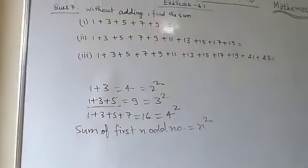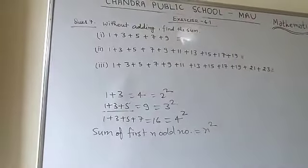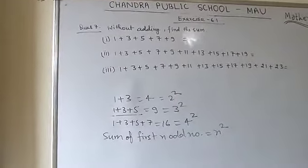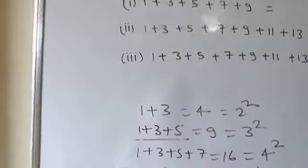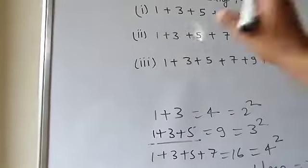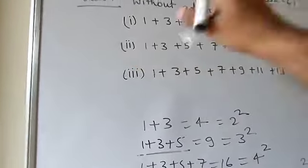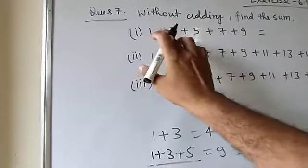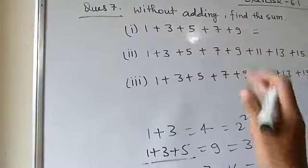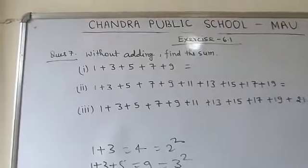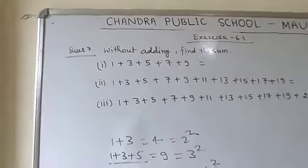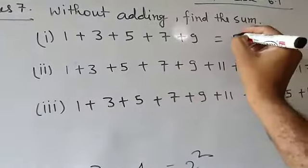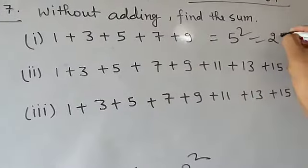If I ask for the sum of the first 7 odd numbers, the answer is 7² = 49. The condition is that the sequence must start from 1. For 1, 3, 5, 7, 9 — these are 5 first odd numbers, so their sum is 5² = 25. You can verify by adding them directly.